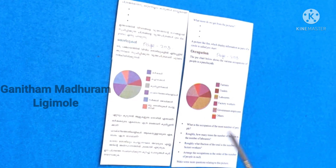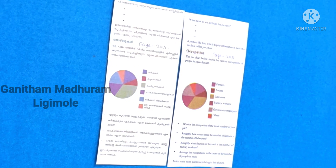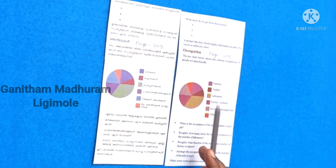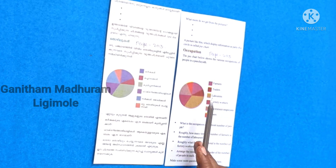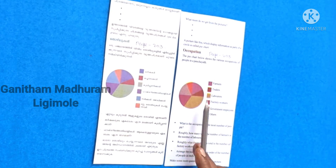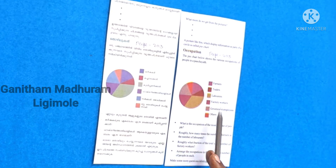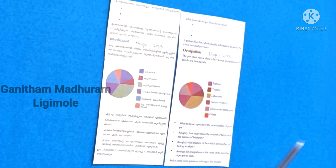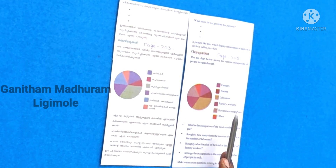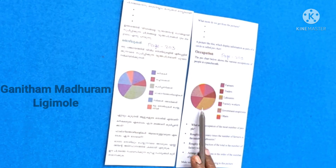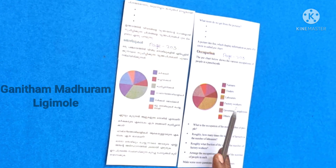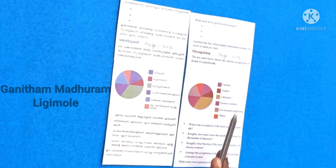We will be able to make some more questions relating to this picture. How many times the number of farmers is labors? Which item shows equal number of people? What part of the number of labors is farmers? Which 3 items added together equals labors?